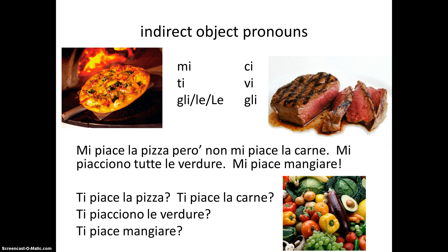Vi piace la pizza? Or we could ask about a group of people: gli piace la pizza? Do they like pizza? Notice that when piacere is used with a verb as the subject, like mangiare — ti piace mangiare — the third person singular form is used, piace. Mi piace mangiare.